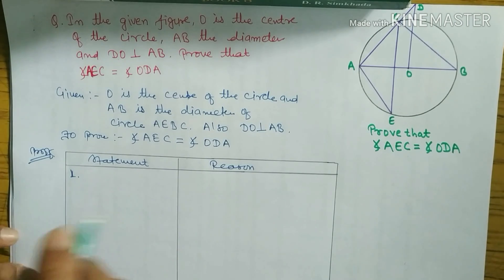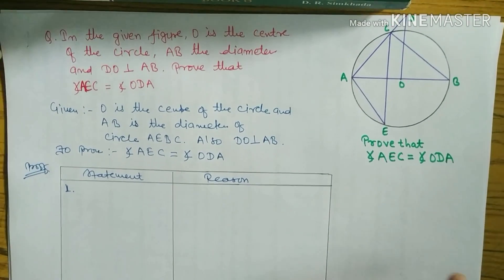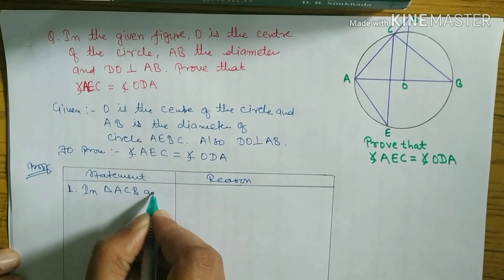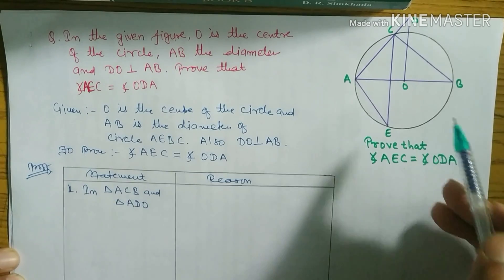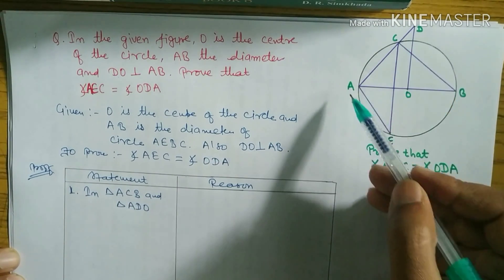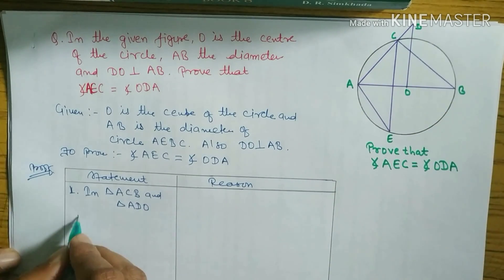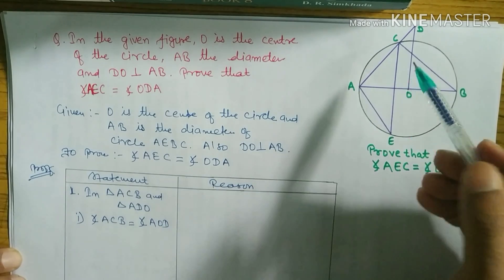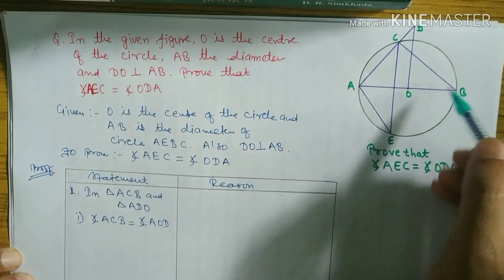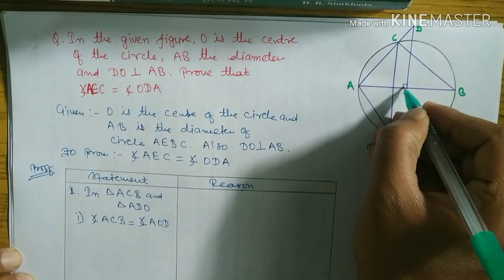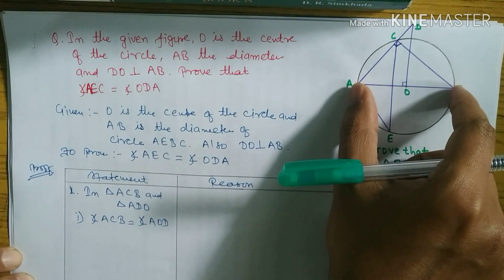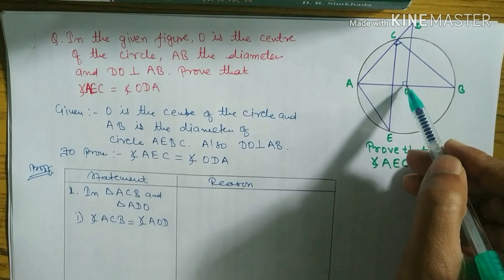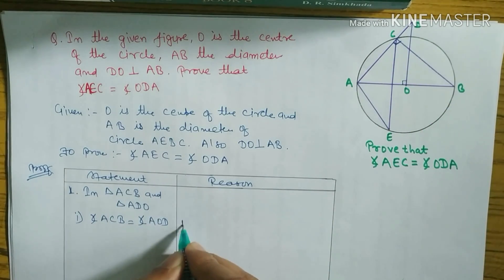In triangle ACB and triangle ADO: angle ACB equals angle AOD. Both are 90 degrees. The reason is — since AB is the diameter, angle ACB is an angle in a semicircle, so it equals 90°. And since DO is perpendicular to AB, angle ODA is also 90°. So statement one: both are right angles.